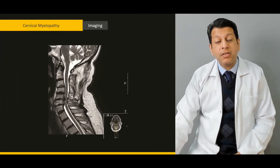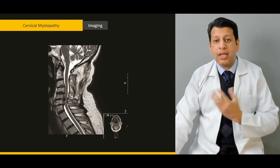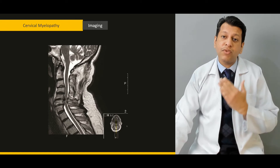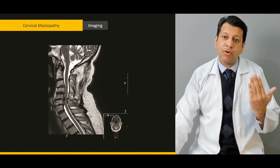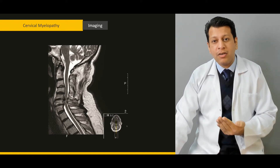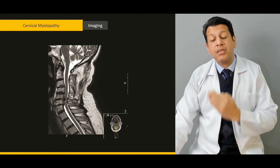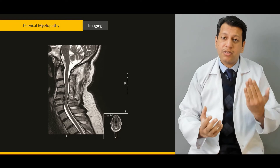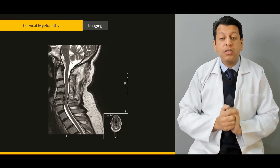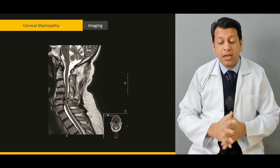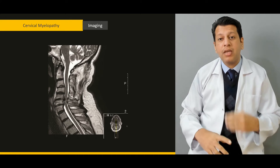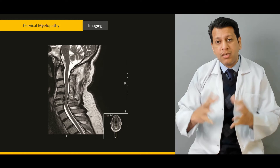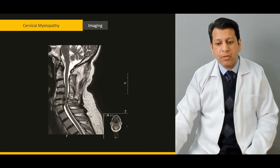Then we'll discuss imaging. As with any orthopedic problem, you first need X-rays. We'll cover the different views: AP, lateral, oblique, and flexion-extension views. We'll discuss why flexion-extension views are needed in cervical myelopathy, and what the gold standard — the MRI — tells us, including the calculations needed to assess the severity of cervical myelopathy.